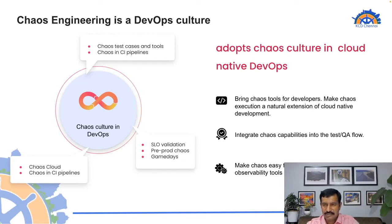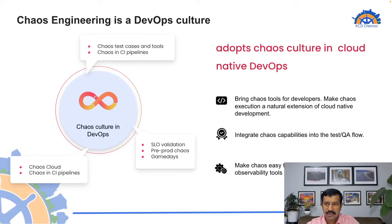You keep creating game days and even before code goes into production you can do failure testing and chaos testing effectively. If you approach failure testing from all angles with good tools, chaos engineering becomes very effective and helps retain reliability even when your systems are highly dynamic and running at high scale.